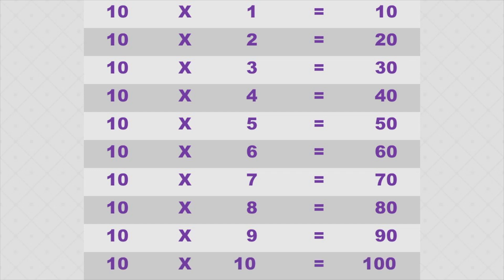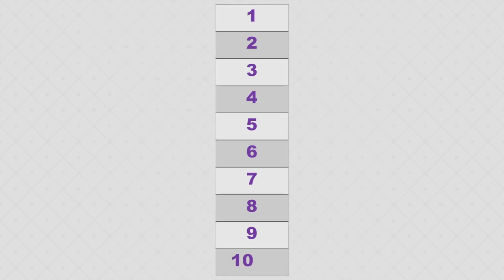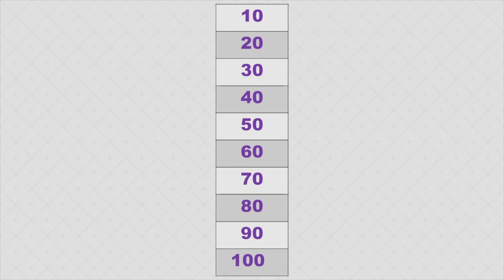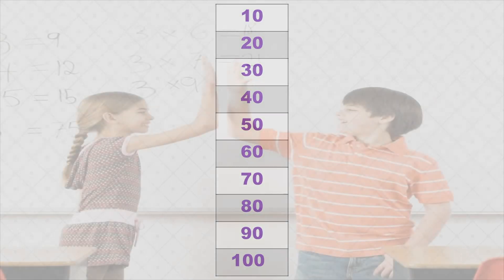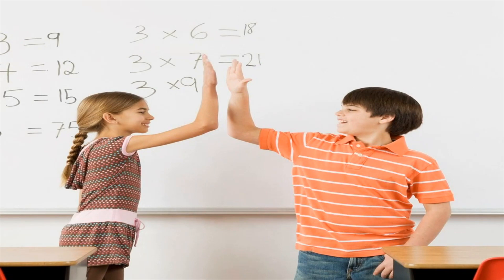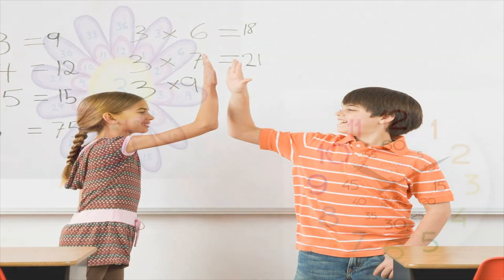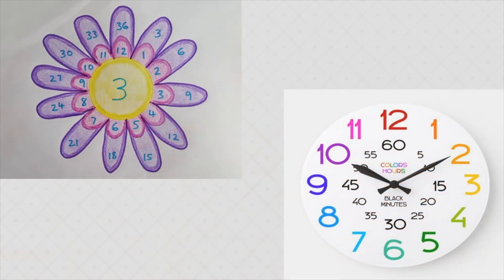The tables of 10 is the easiest one. If you remember the tables of 1, you just need to add 0 after each number to make it a multiple of 10. Note that 10 into 10 is 100, which is a three-digit number. It was fun, wasn't it? Instead of memorizing, if we can follow the pattern formed by each table, it makes the process of learning easier. As every table follows a pattern, it is important to remember this arrangement.